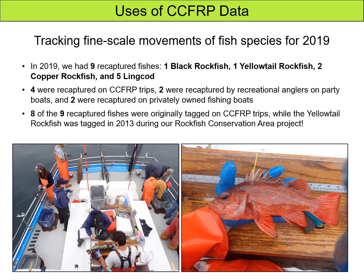Now I'll discuss some of our recaptures from the 2019 sampling season. In total we had nine reported tag recaptures: one black rockfish, one yellowtail rockfish, two copper rockfish, and five lingcod. Four were recaptured on CCFRP trips, two by recreational anglers on party boats, and two on private fishing boats. Eight were originally tagged on CCFRP trips, but one fish — the yellowtail rockfish — was actually tagged back in 2013 during our rockfish conservation area project.